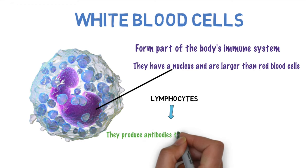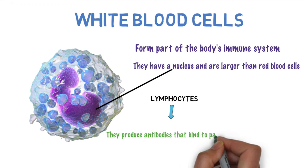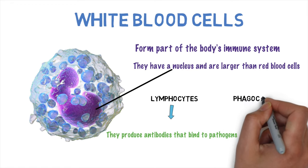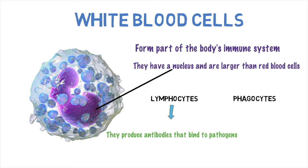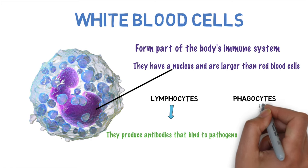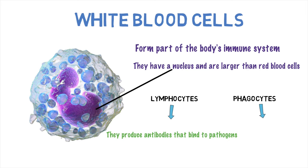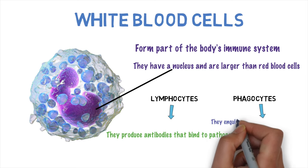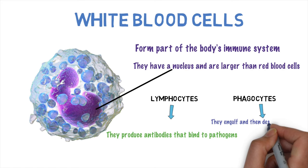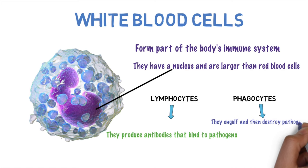It binds them together, so it binds the pathogens together. And then there are ones called phagocytes. What they do is they are the ones that engulf pathogens. So it almost looks like it's eating. It's not eating, but basically they engulf and then destroy the pathogens. So two types: lymphocytes and phagocytes.